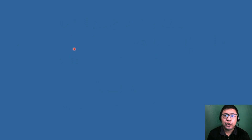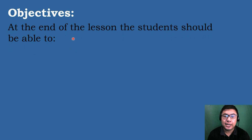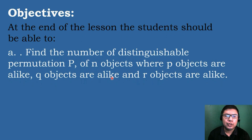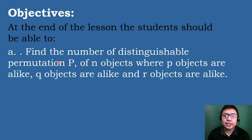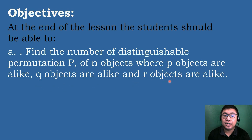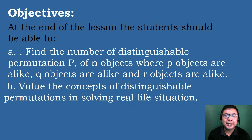Let's have the following objectives in today's topic. At the end of the lesson, the students should be able to: Letter A, find the number of distinguishable permutations of N objects where P objects are alike, Q objects are alike, and R objects are alike. And Letter B, value the concepts of distinguishable permutations in solving real-life situations.